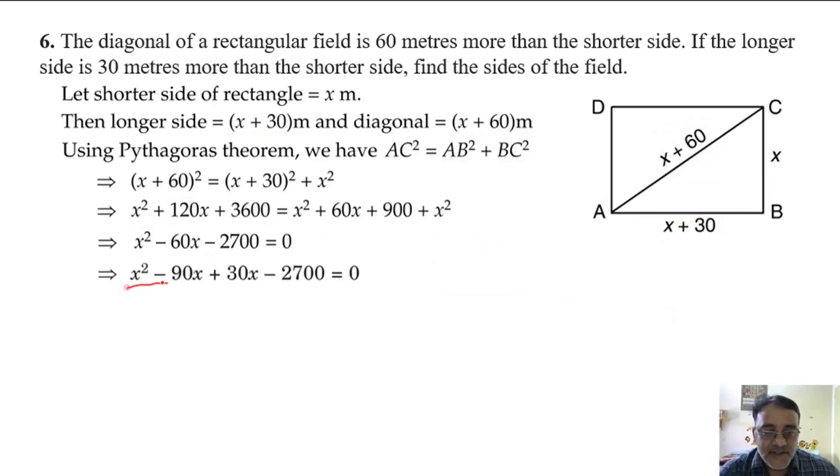What is common between these two? X. And what is common in these two? 30. So we will take common. Again in these two, x minus 90 is common.